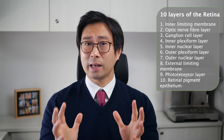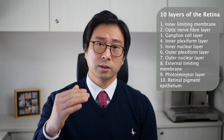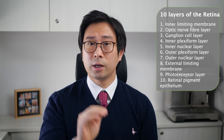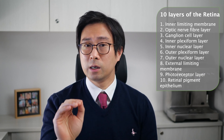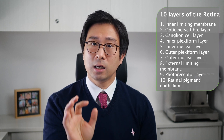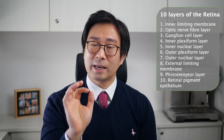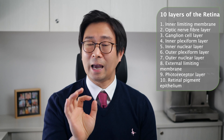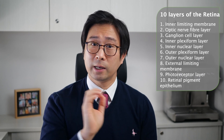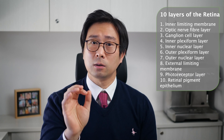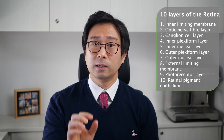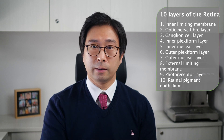There are ten layers in the retina and starting from the inside we have: the inner limiting membrane, the optic nerve fibre layer, the ganglion cell layer, the inner plexiform layer, the inner nuclear layer, the outer plexiform layer, the outer nuclear layer, the external limiting membrane, the photoreceptor layer, and finally the retinal pigment epithelium.